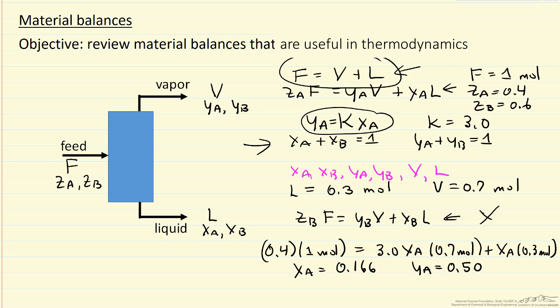So this is an example of using mass balances along with equilibrium information to determine the conditions of vapor and liquid phase leaving a flash system.